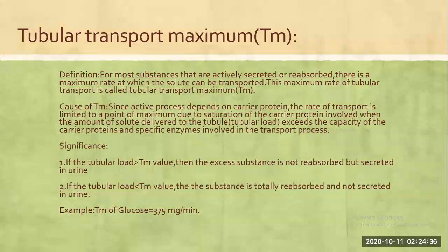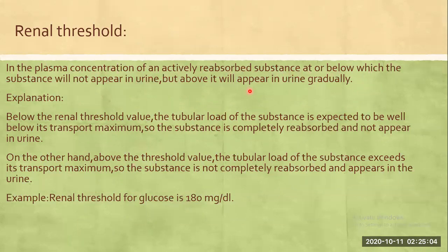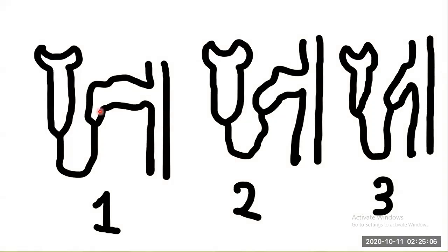The plasma concentration of an actively reabsorbed substance at or below which the substance will not appear in urine, but above which it will appear in urine gradually, is called renal threshold. Below this level, the substance will not appear in the urine and can be fully reabsorbed. The problem is that not all nephrons reach this level simultaneously.